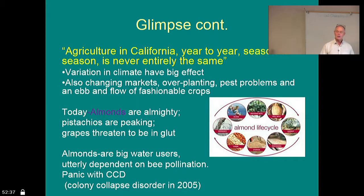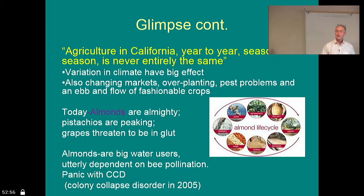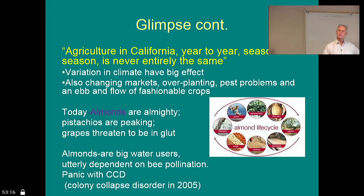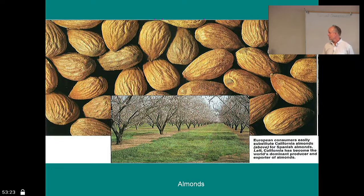Almonds are pretty big water users and they have issues like pest problems and pollination problems. Colony collapse disorder — where whole honeybee colonies just die off — is something we're trying to figure out the cause of. That would be a really good topic for your sustainable practice report for this class. What is colony collapse disorder, what effect does it have on crops that require pollination? I personally love almonds — it's a huge crop, and 98% of the world's supply comes from California.